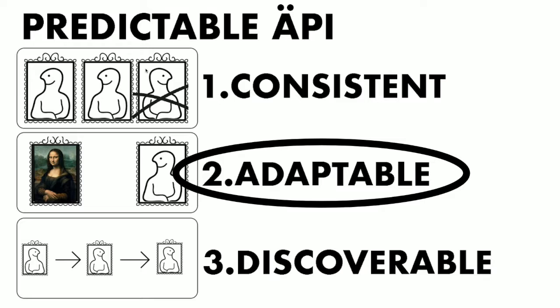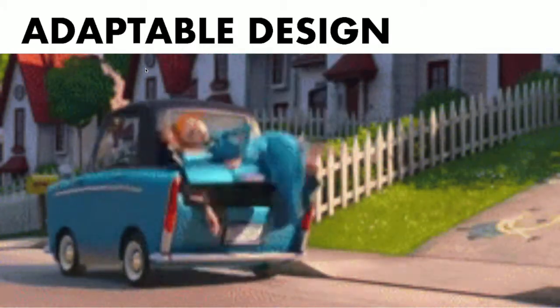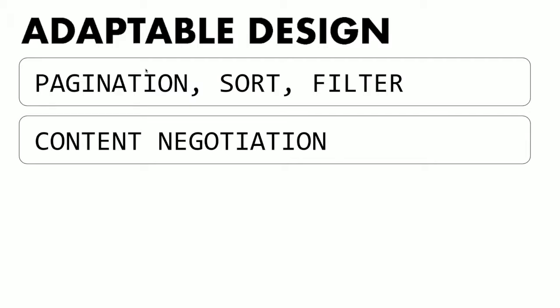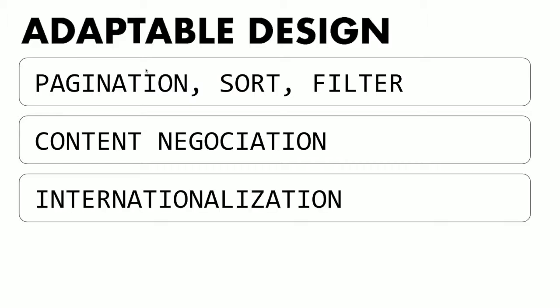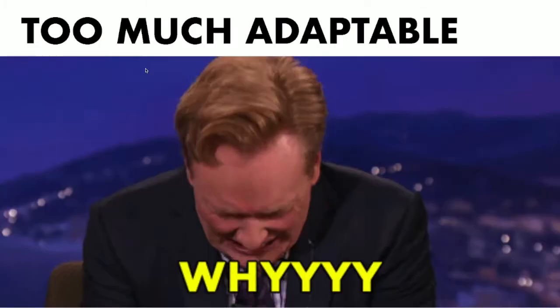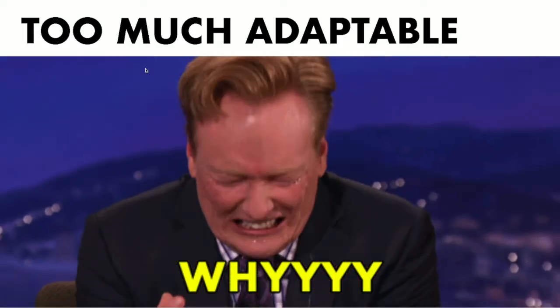Another way of creating a predictable design is to be adaptable to users. Two persons of different heights can use the same car because each can tune the seat and steering wheel to their liking. Providing adaptable APIs can be done with simple features such as pagination, filtering, and sorting. You can also let people choose between JSON, CSV, PDF, and even MP3 audio file representations using content negotiation. If you provide an API worldwide, think about internationalization and localization. You may let people choose exactly the data they want by providing a GraphQL API, for example. But be warned: being too adaptable may make your API complex to use.